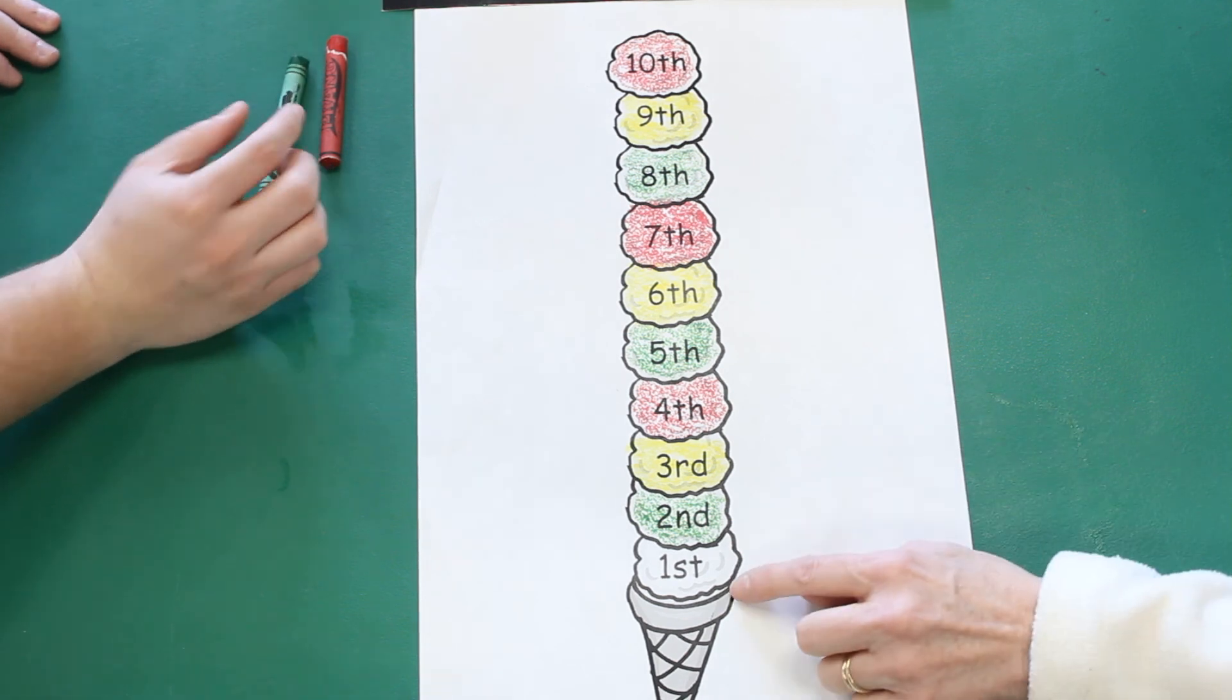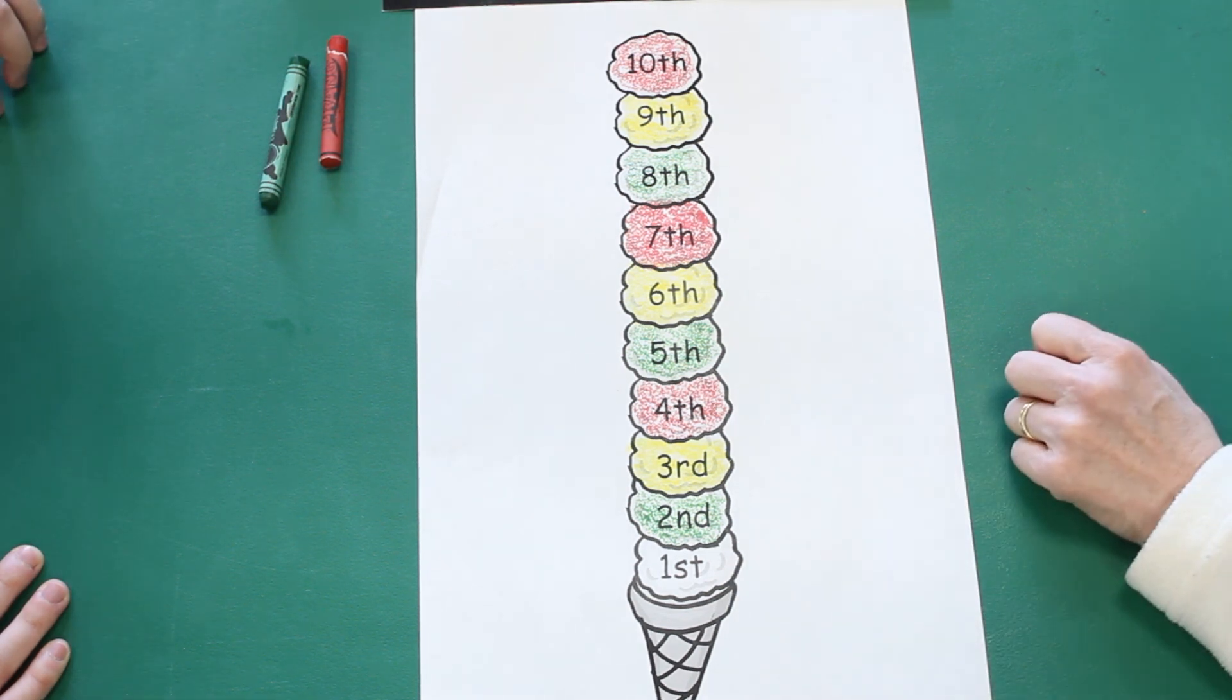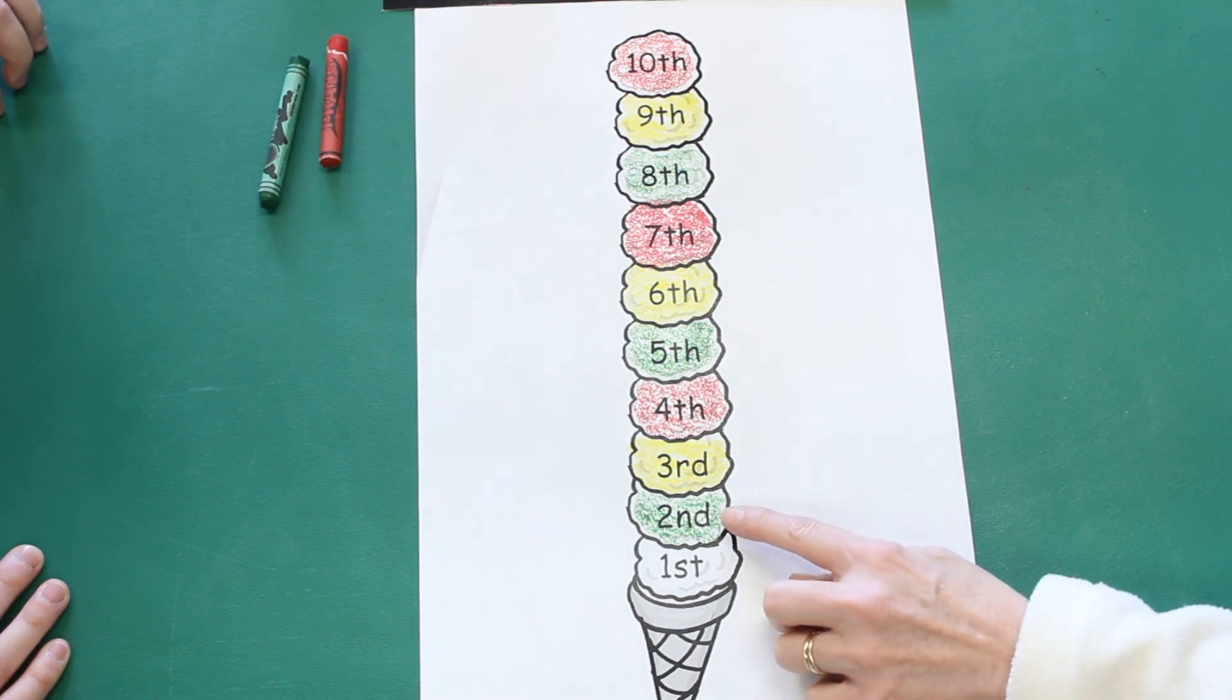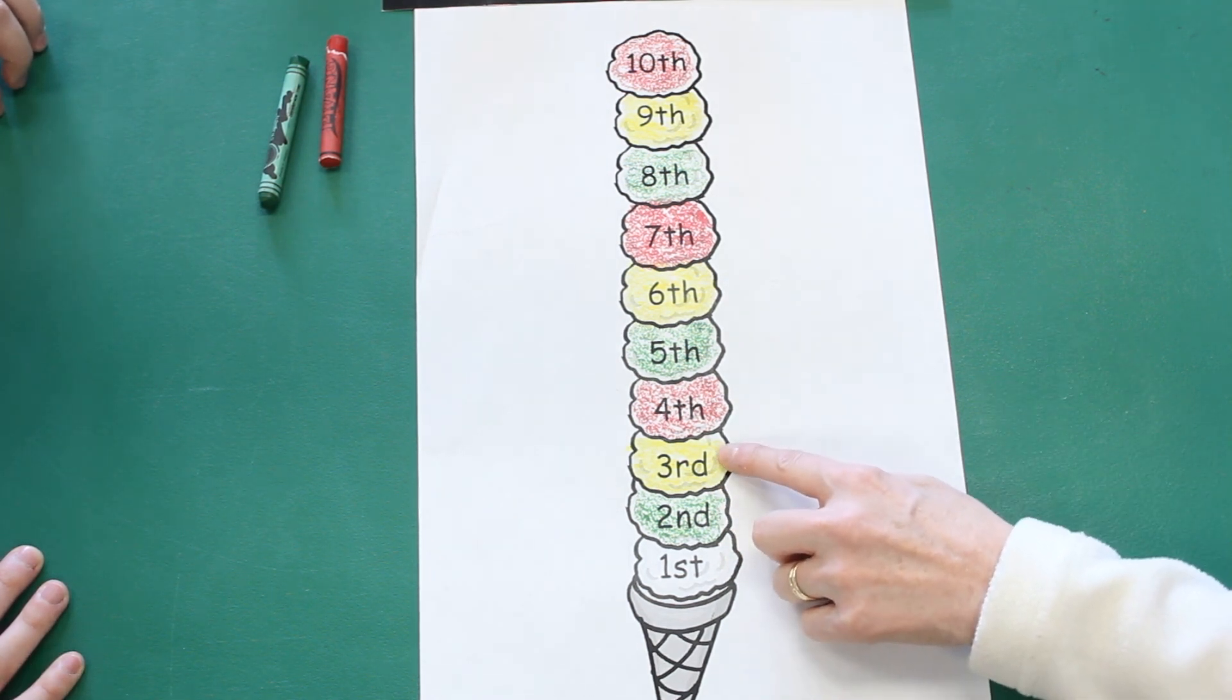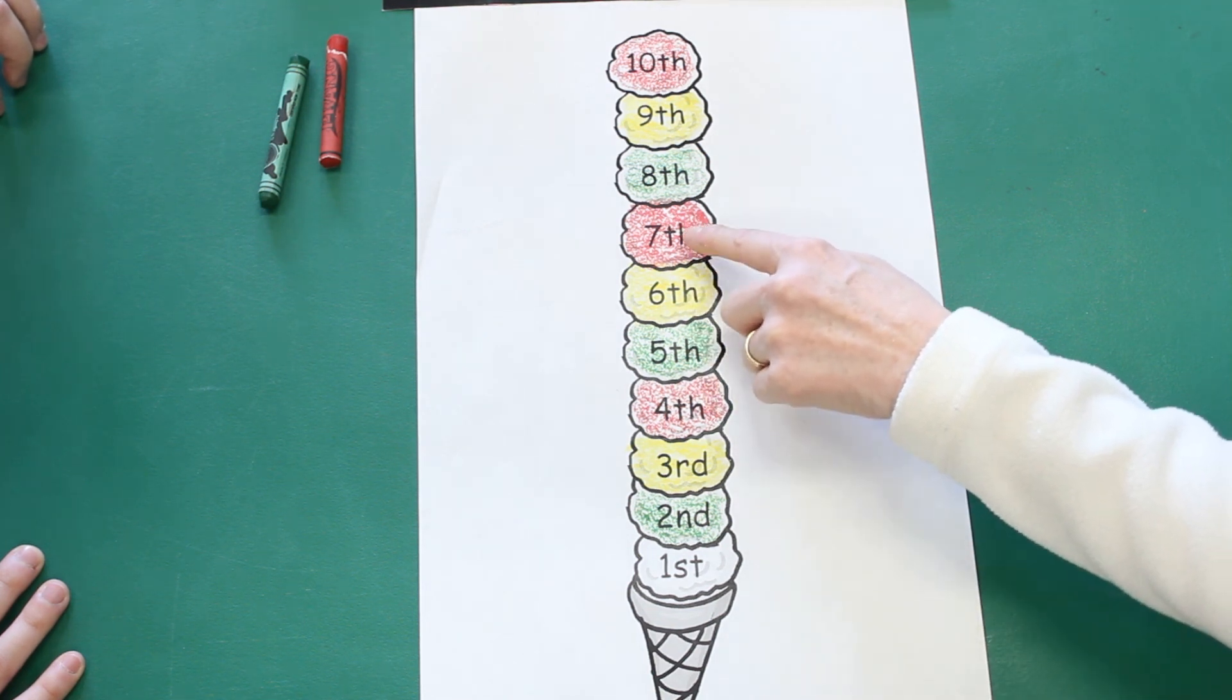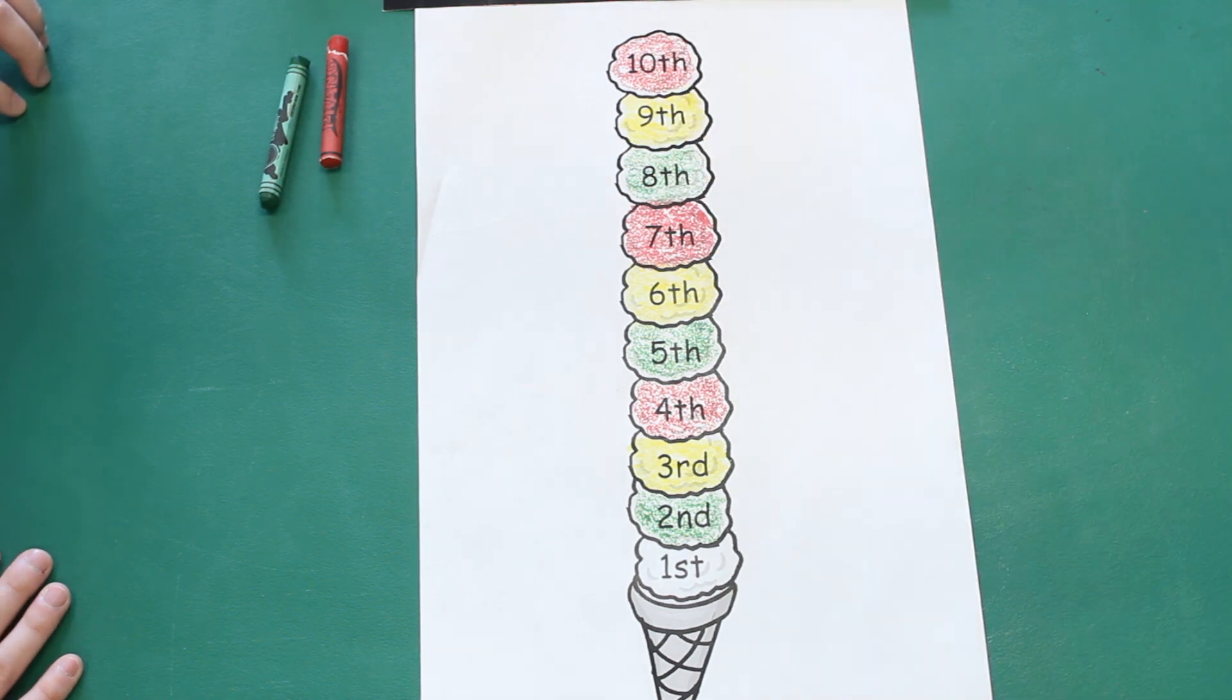What color should the first scoop of ice cream be? White. Should we just leave it white? Let's leave it white. I think that's a fantastic idea. Green, yellow, red. Green, yellow, red. Green, yellow, red. Awesome.